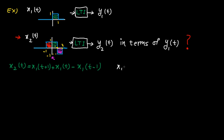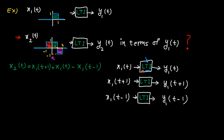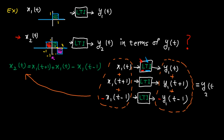So here is what we get. We know if X1(T) goes through the system, the output is Y1(T). The system is time-invariant, so if we shift the input by one unit to the left, the output gets shifted by the same amount. Since it's time-invariant, if you shift the input by one unit to the right, the same time shift will happen at the output. Also, we know the system is linear. Therefore, if you multiply the input by minus one, the output gets multiplied by minus one too. Also, because the system is linear, a linear combination of inputs results in a linear combination of outputs. This is basically X2(T) and this is Y2(T) in terms of Y1(T).